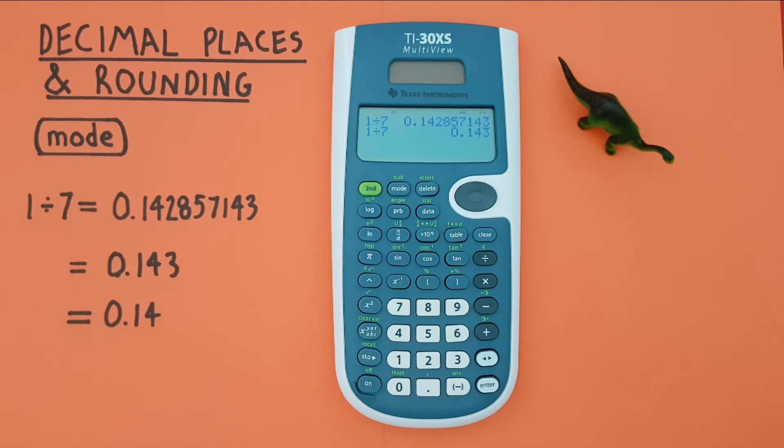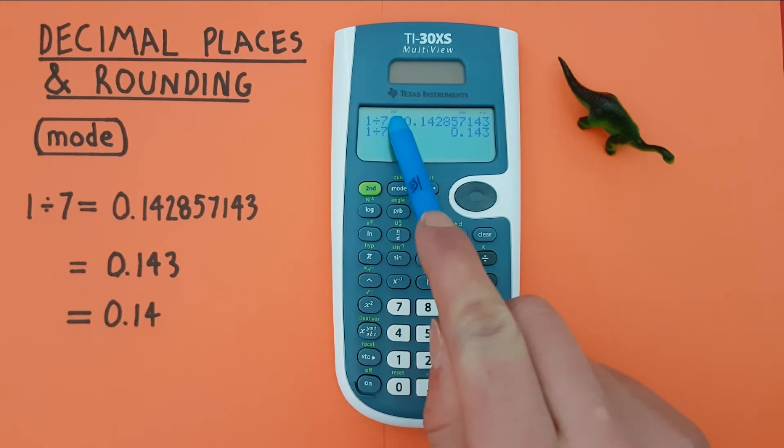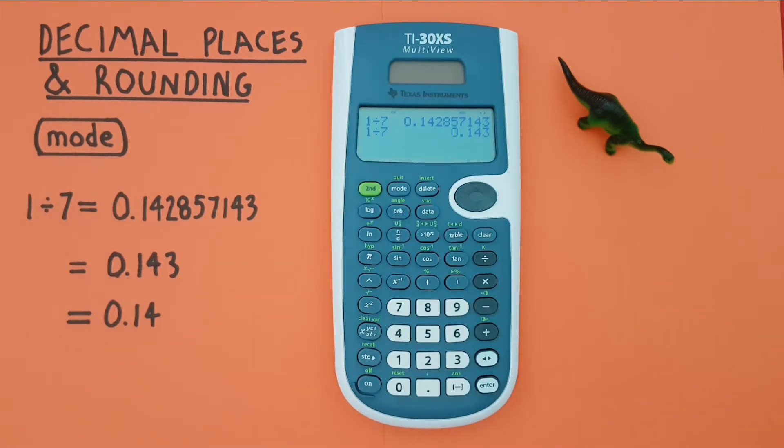When we do have a set or fixed number of decimal places, you'll see the word fix appear on the top of your screen right here. This is to remind you that your answer is being rounded. So if you do see fix at the top of your screen, be aware that your result is being rounded.